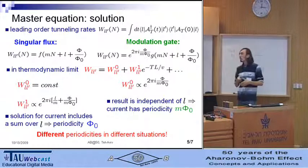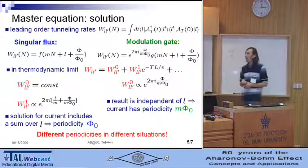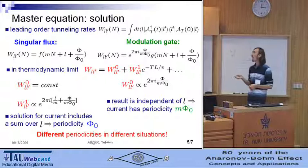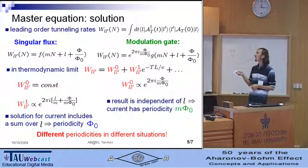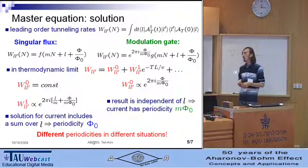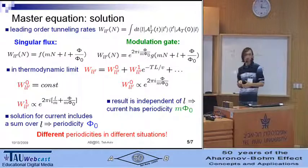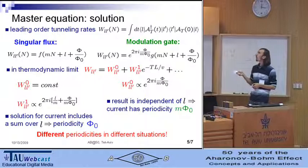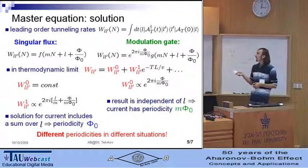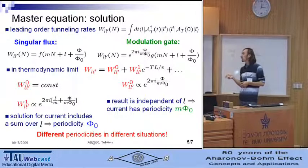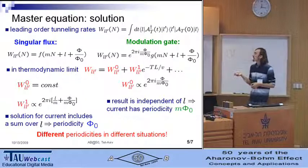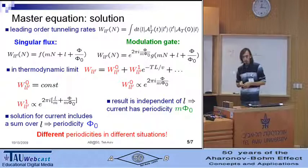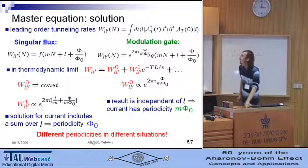We conclude that the oscillations in case of singular flux are suppressed in thermodynamic limit and thus could be interpreted as a Coulomb blockade effect. While in case of modulation gate, they survive in thermodynamic limit and present a quasiparticle Aharonov-Bohm effect.